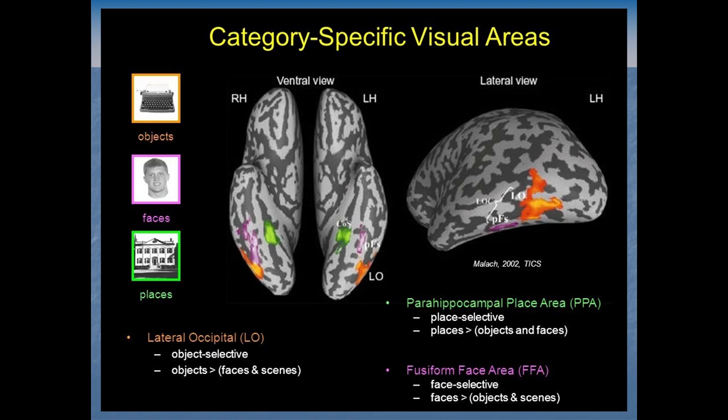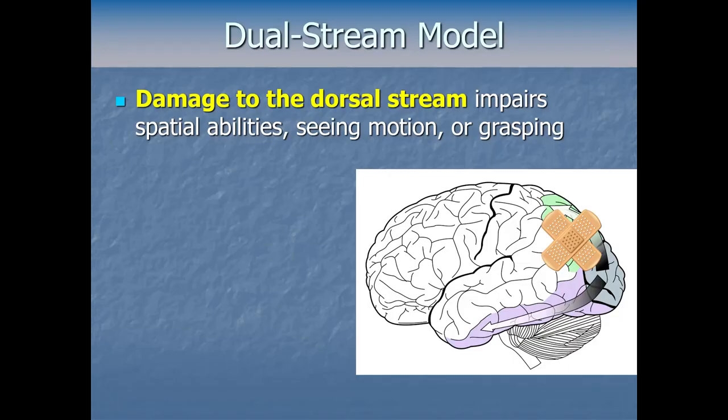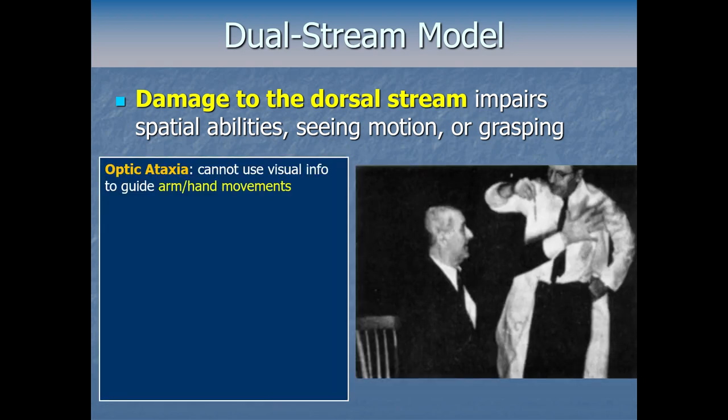Now that we've seen the two streams — the dorsal where/how stream and the ventral what stream — let's see what happens when parts of these brain pathways get damaged, say by a stroke, tumor, or traumatic brain injury. That'll tell us what those areas are normally doing in a healthy brain. Because of what we know about the dorsal stream's function, it shouldn't surprise you that dorsal stream damage often impairs spatial abilities, seeing movement or motion, or visually guided grasping and reaching.